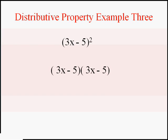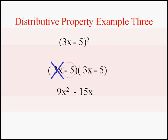What we can do is do what the 2 means, which is write it twice. Well now we can multiply. Let's do a little bit at a time. Take care of the 3x. I get 9x². 3x times minus 5 is negative 15x. And now I'm done with the 3x and I have to do the minus 5.